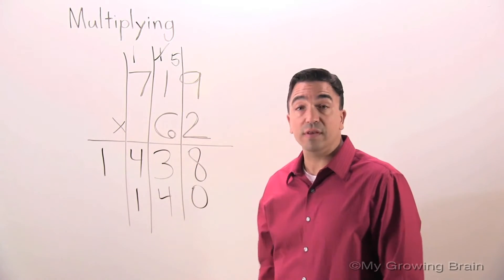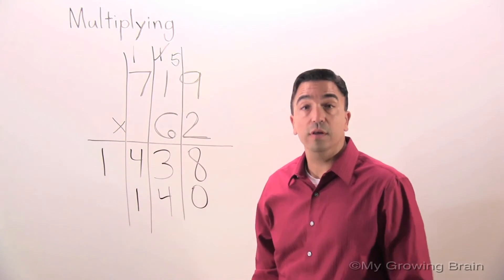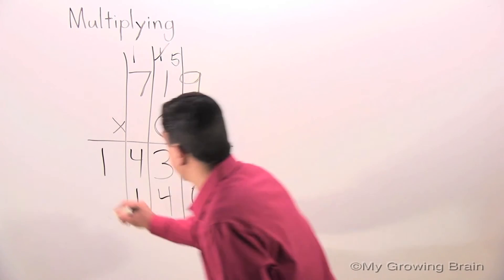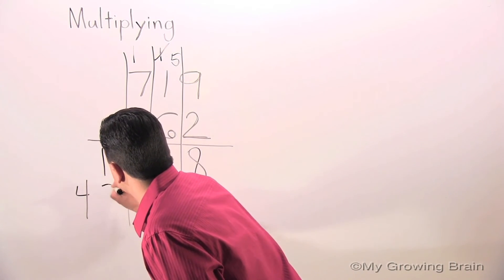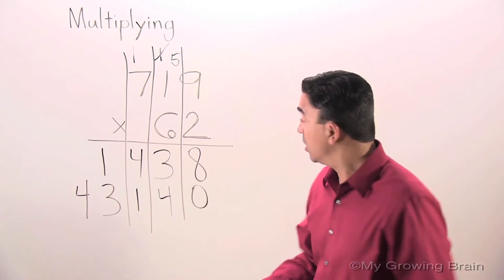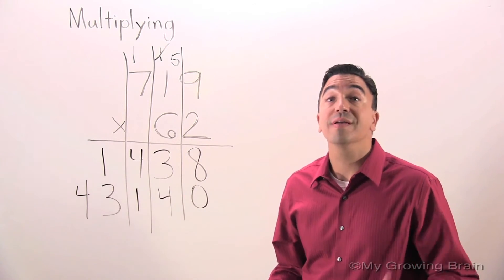Six times seven is 42. Plus one, 43. Now, we're going to add our numbers together.